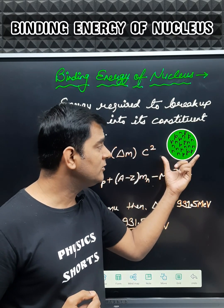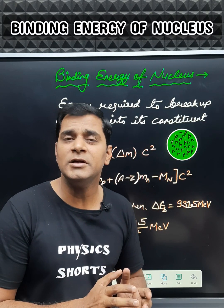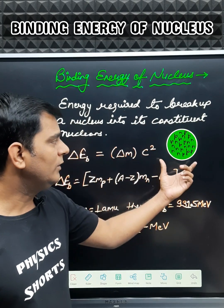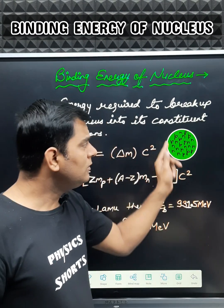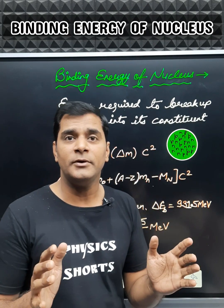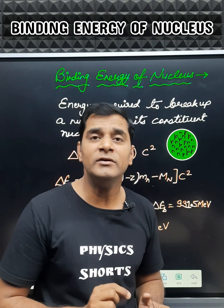The binding energy of a nucleus is defined as the total energy required to break up a nucleus into its constituent nucleons, that is, to separate all the nucleons up to infinite distance of separation so they do not interact with each other.